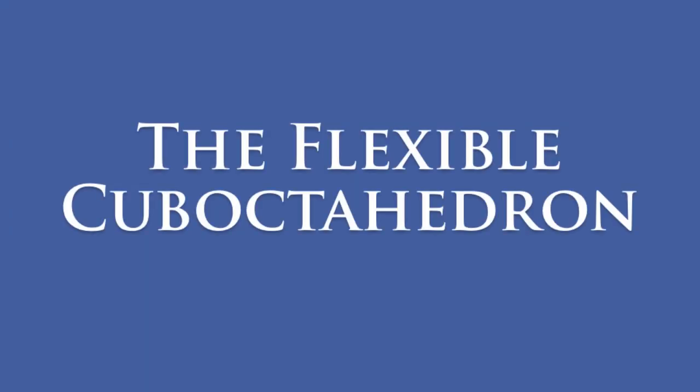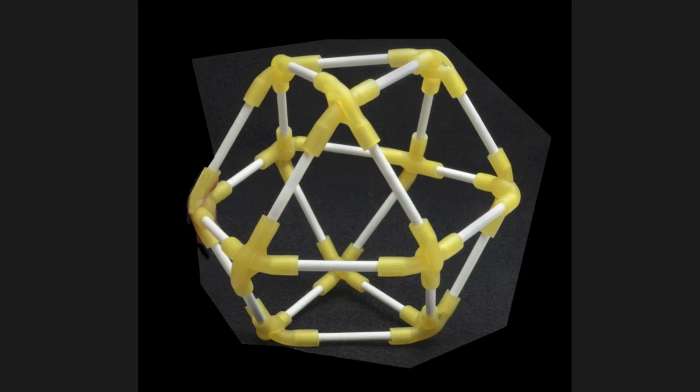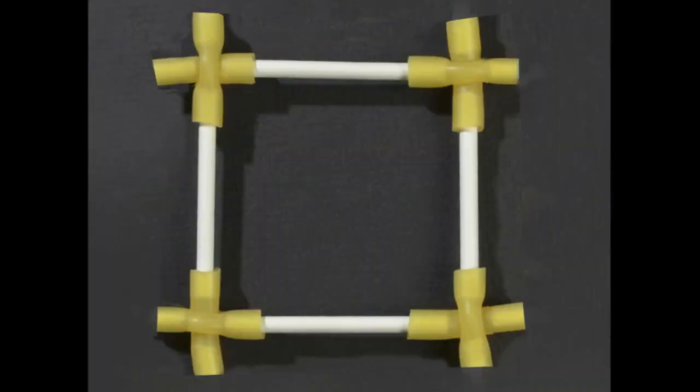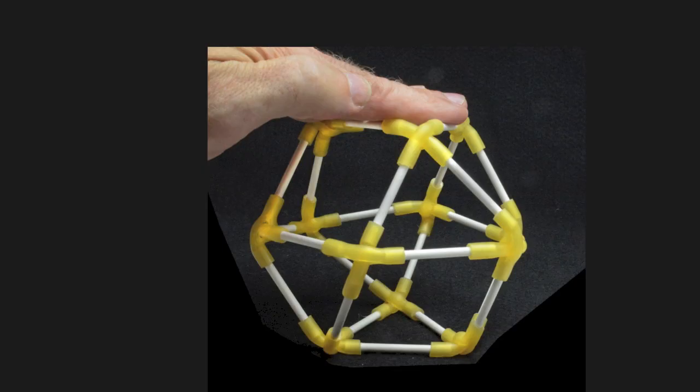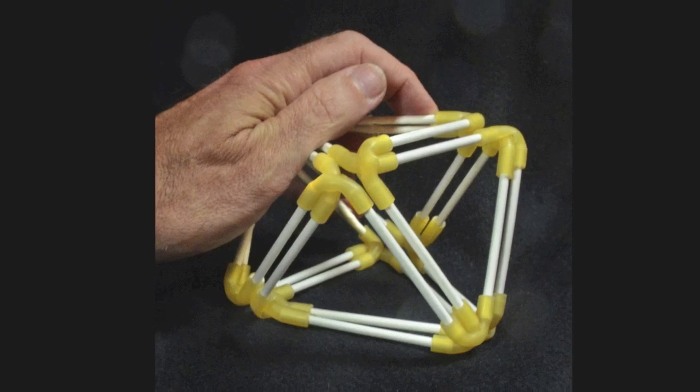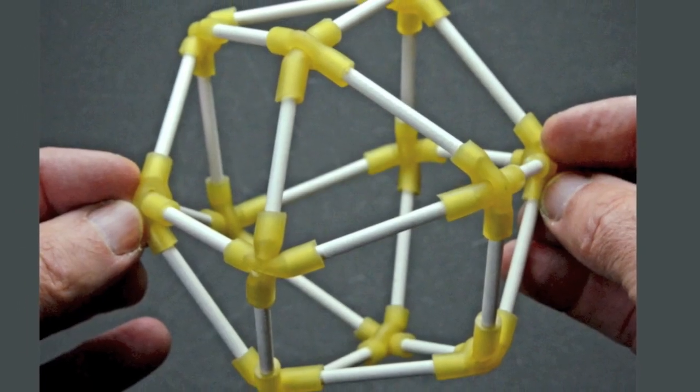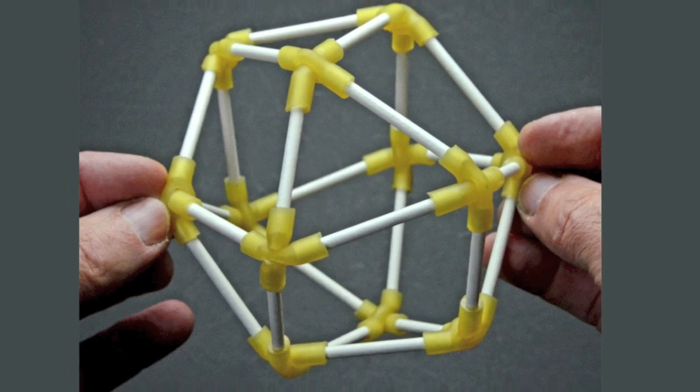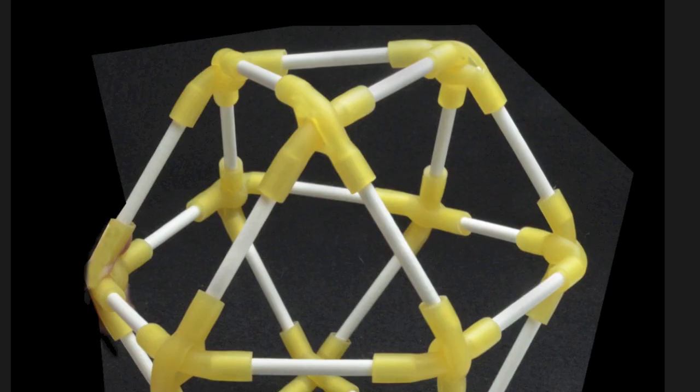The third kit is called the flexible cube octahedron. First, we'll build a model from vectors, or lollipop sticks, and vertices, or flexible rubber tubing. Then we'll explore how the cube octahedron can be magically transformed into an icosahedron, an octahedron, or a tetrahedron. But it will always spring back to its original cube octahedron shape. The finished model is flexible, but it's also quite durable. You can toss it around the room and it won't even break.